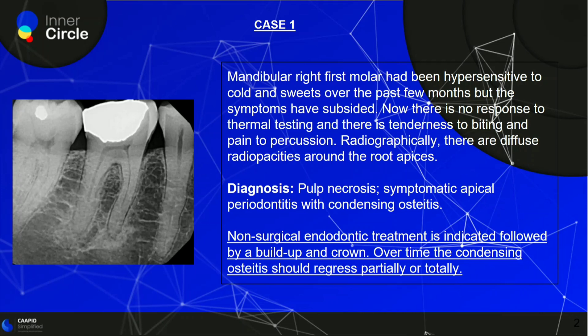The important points to note: it was hypersensitive to cold and sweets but the symptoms have subsided, there is no response to thermal testing, there is tenderness to biting and pain on percussion, and radiographically there are diffuse radiopacities seen around the root apices. So the diagnosis here is pulp necrosis.